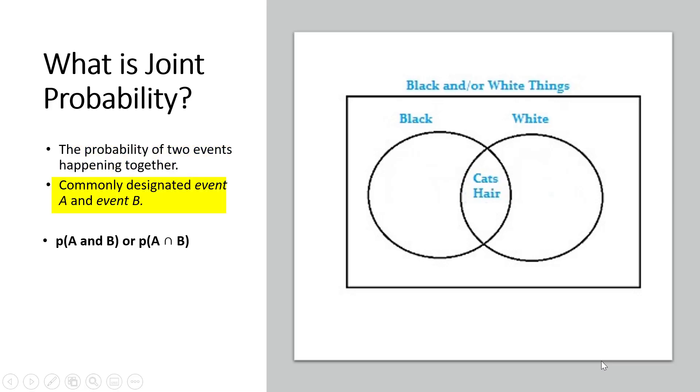The two events are usually designated event A and event B. In probability terminology, it can be written like this: we have small p, that's our probability of A and B happening together. Or we can use set notation and write a cap instead of the word AND.